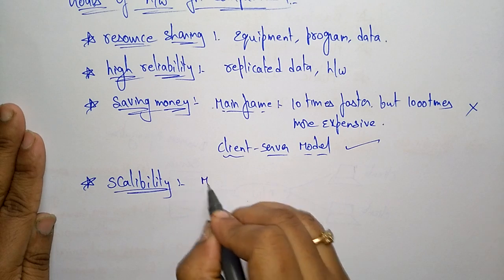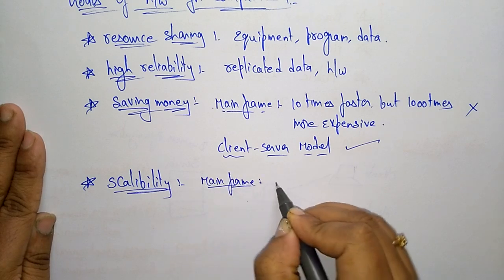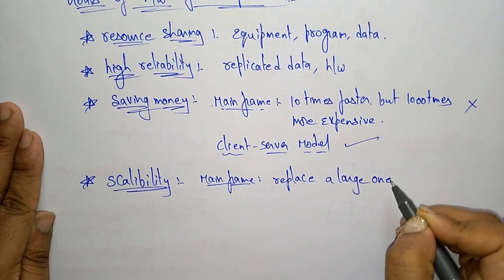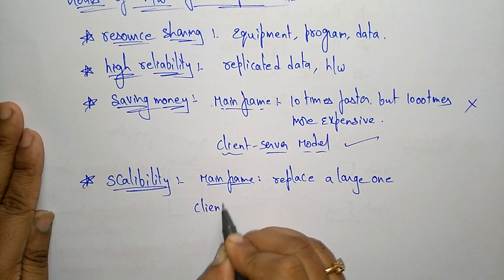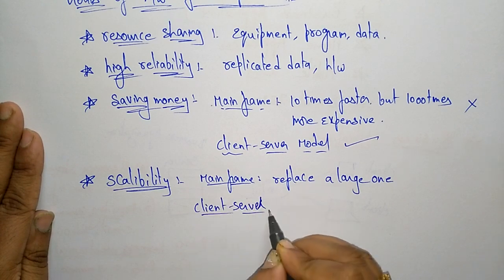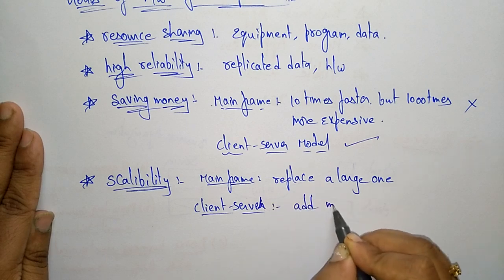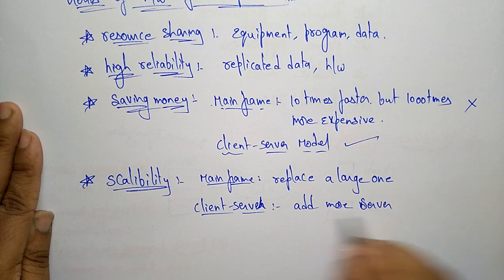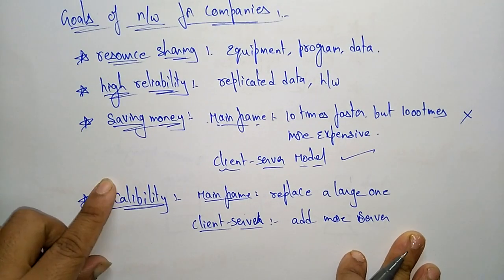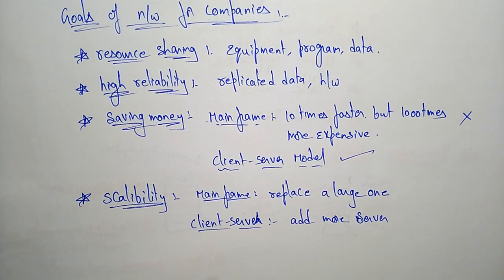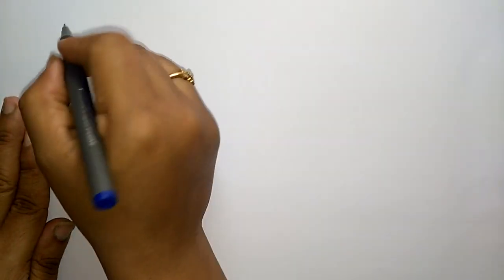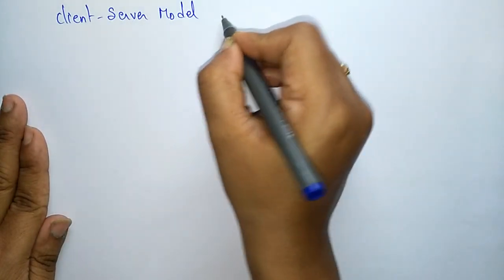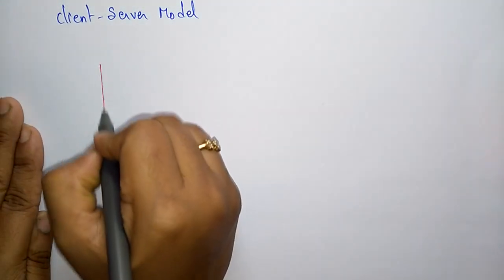The next goal of network is scalability. With a mainframe, if any damage occurs, you have to replace the entire large system, which is more expensive. But with the client-server model, you can add more servers. If one server is not working, you can add more servers. If you want to increase performance, you can add more servers. These are the goals of network for companies in business application areas. Now let me explain the client-server model.